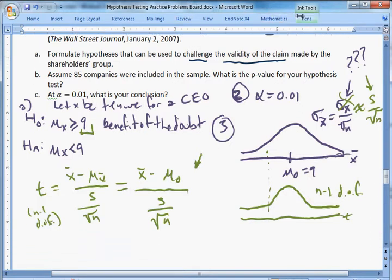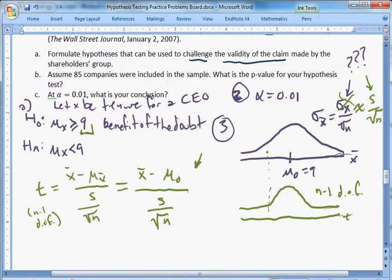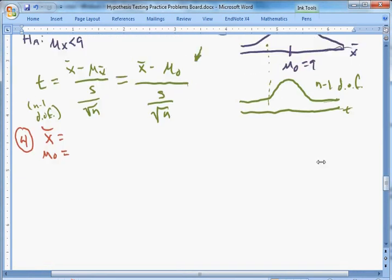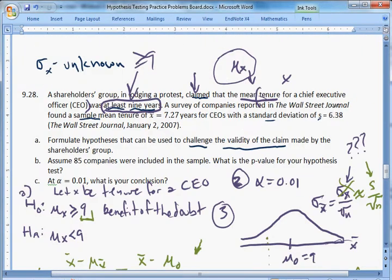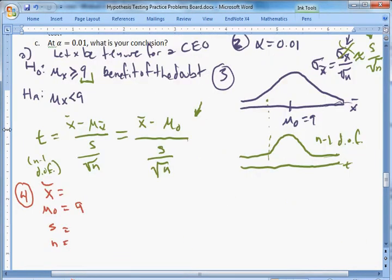Okay, step four is to actually calculate it. So, we need x bar, we need mu zero, we need s, and we need n. And let's see what we have. Oh, we have mu zero already, that's nine. Let's scroll up from the question. Let's see, where's x bar, where's x bar? Oh, right here, x bar is 7.27, and s is 6.38. It just gives those two, 7.27 and 6.38.